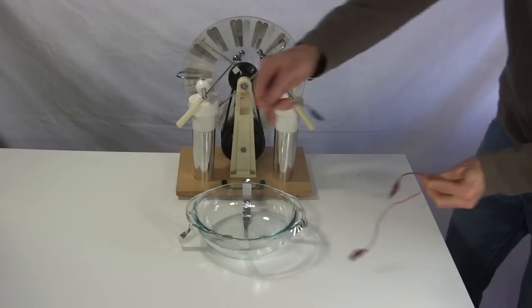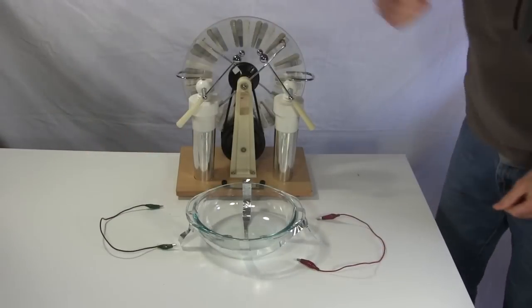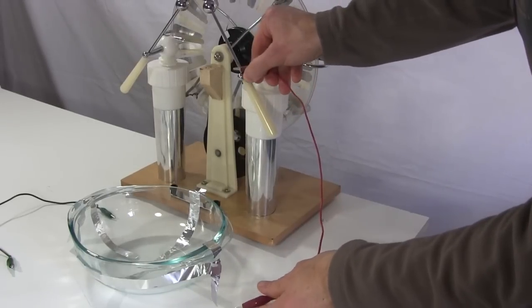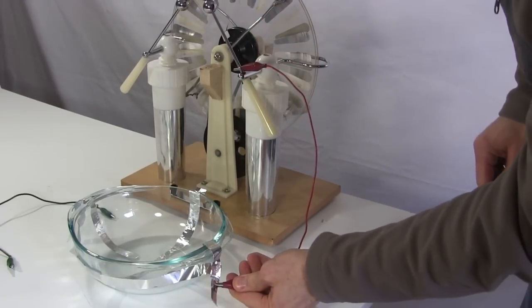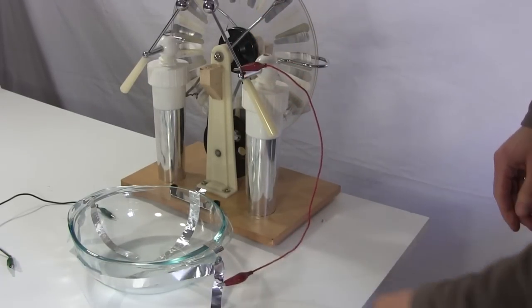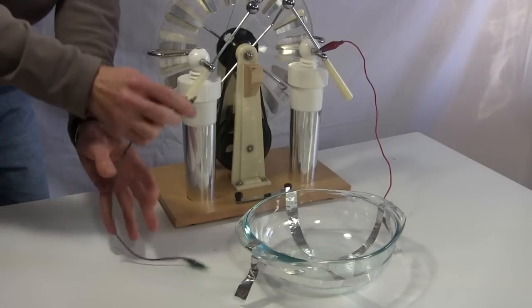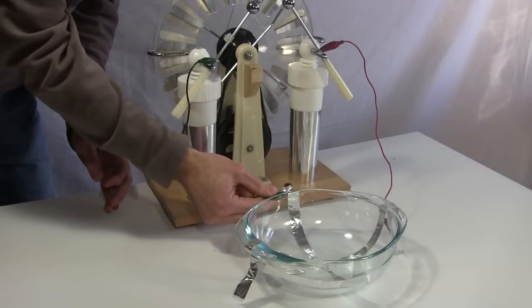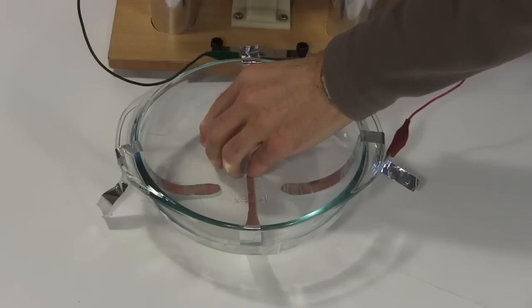Here I have a Wimshurst machine and some wires with alligator clips on their ends. I connect one end of one wire to one side of the Wimshurst machine spark gap, and the other end to the two shorter strips, the ones that are connected together. Then I connect one end of another wire to the other side of the Wimshurst machine spark gap, and the other end to the long strip.